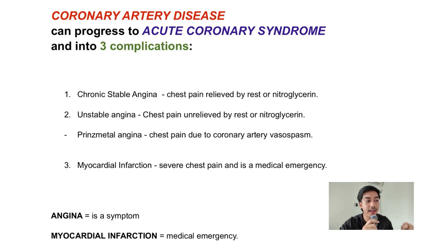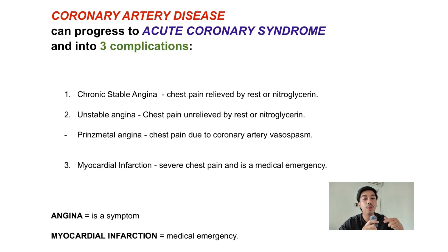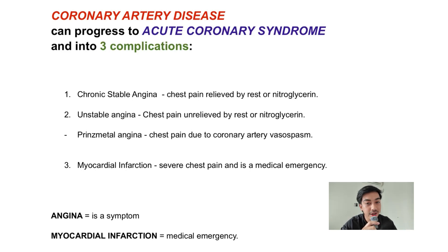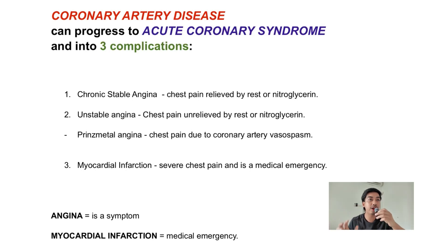A little overview: chronic stable angina is chest pain relieved by rest or nitroglycerin. Unstable angina is the opposite — it is not relieved by rest or nitroglycerin. Myocardial infarction, as we all know, is heart attack due to the lack of blood supply in the heart, leading to tissue death or necrosis. You have to remember that myocardial infarction is a medical emergency, while angina in general is a symptom.